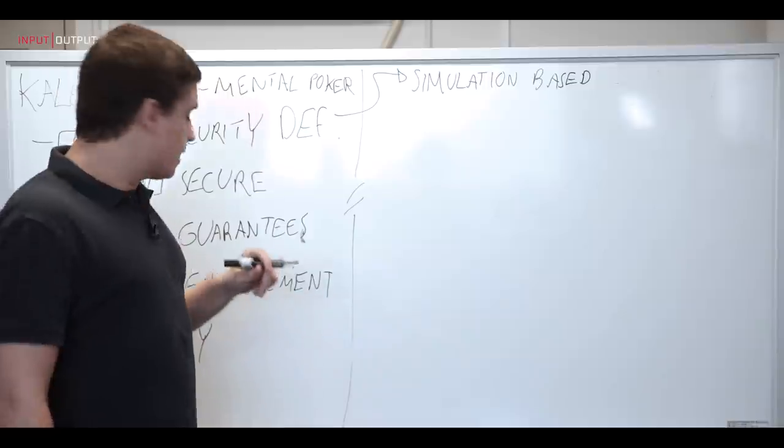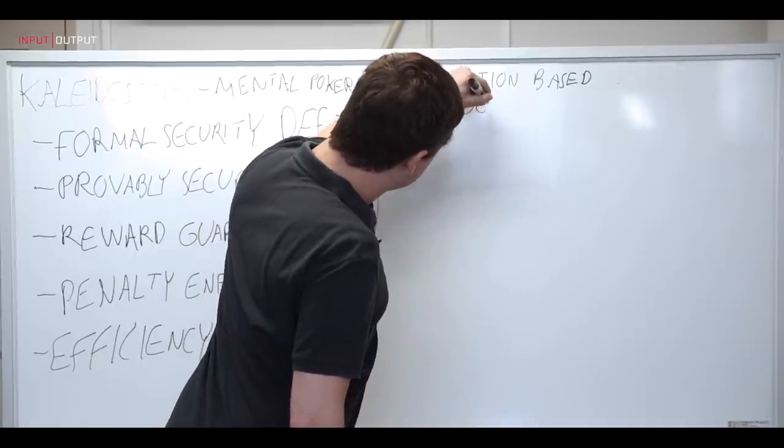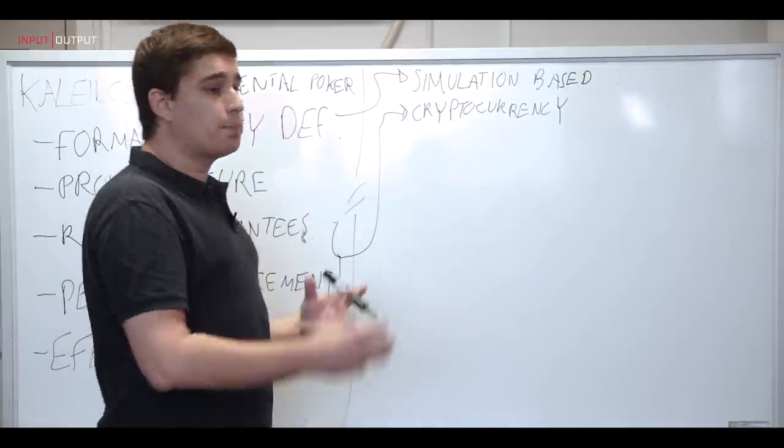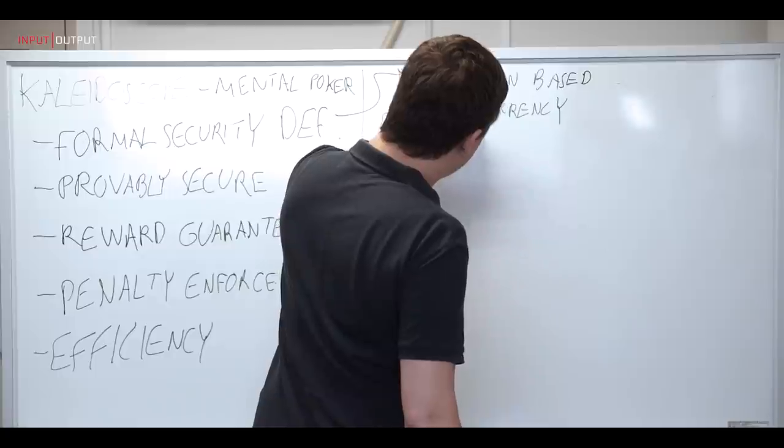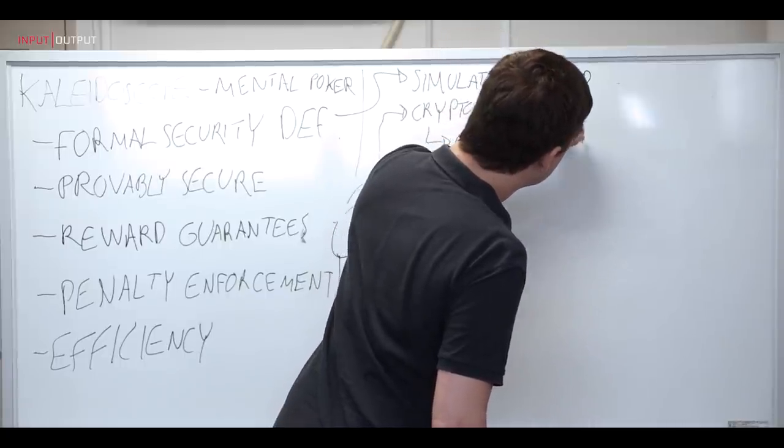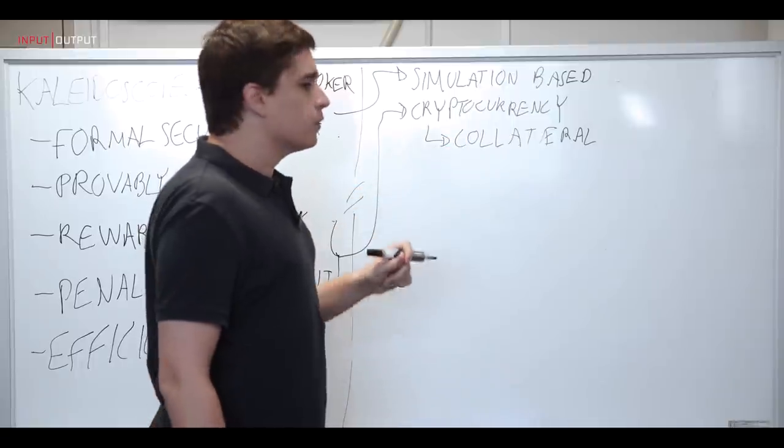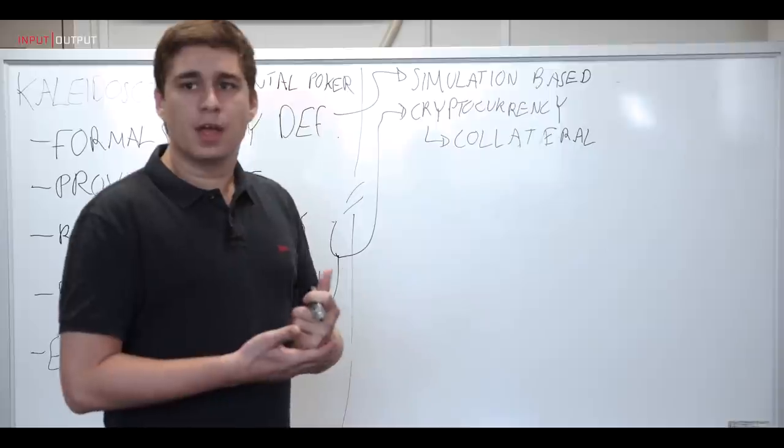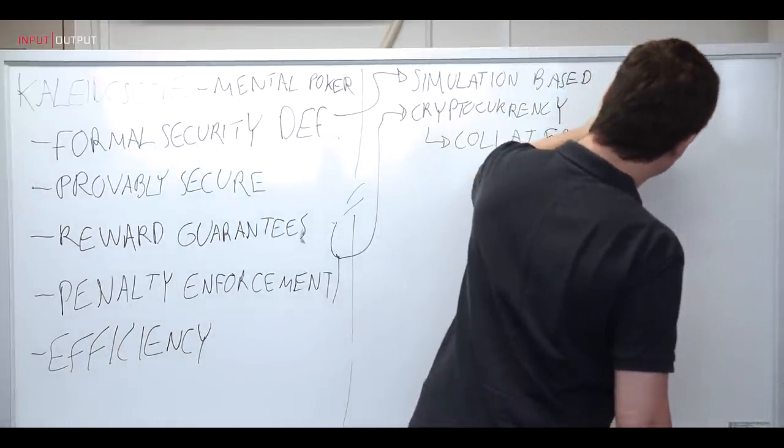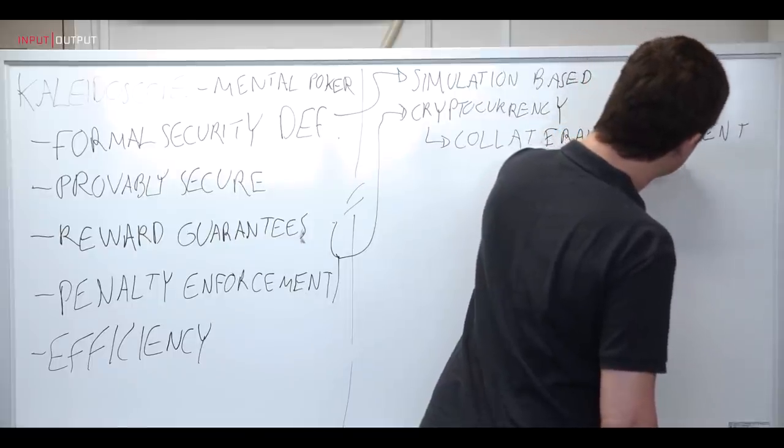Now, how do we provide reward guarantees and penalty enforcement? In order to do that, we rely on cryptocurrencies. So before the protocol actually starts running, all the players are required to deposit some collateral coins that will be used to punish them if they do cheat. So this collateral is going to be locked inside an entity such as a smart contract and after the protocol is completed successfully, will be delivered back to the users.